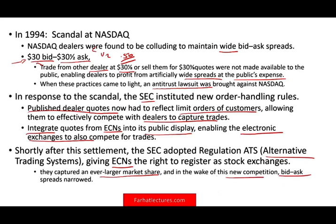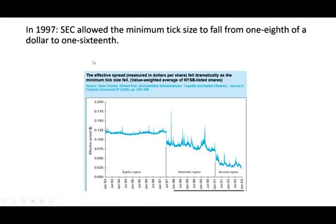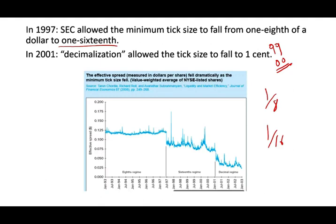Also in 1997, the SEC allowed the minimum tick size to fall from one-eighth to one-sixteenth. Before it was one-eighth, now it was one-sixteenth, which reduced the bid and ask spread. Then eventually in 2001, they allowed decimalization for the tick size to fall to one penny. Now prices are quoted in decimals, for example $30.25 for the bid and $30.28 for the ask — so it's by pennies, rather than fractions of one-eighth.